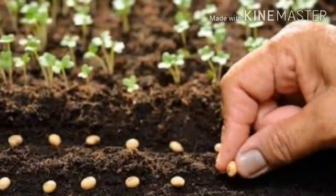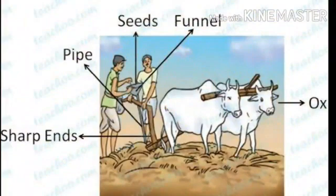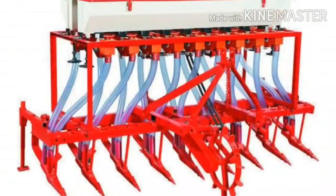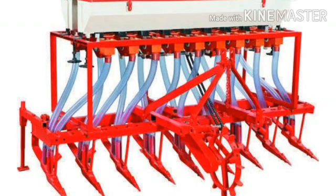The traditional method of sowing seeds is manual or by a funnel-shaped tool filled with seeds, where the seed is passed down through a pipe having sharp ends that pierce into the soil. Nowadays, the modern tool — the seed drill — is used for sowing with the help of tractors. The seed drill helps to sow seeds uniformly at regular intervals, avoiding overcrowding of plants, and covers the seeds with soil, preventing damage caused by birds after sowing.